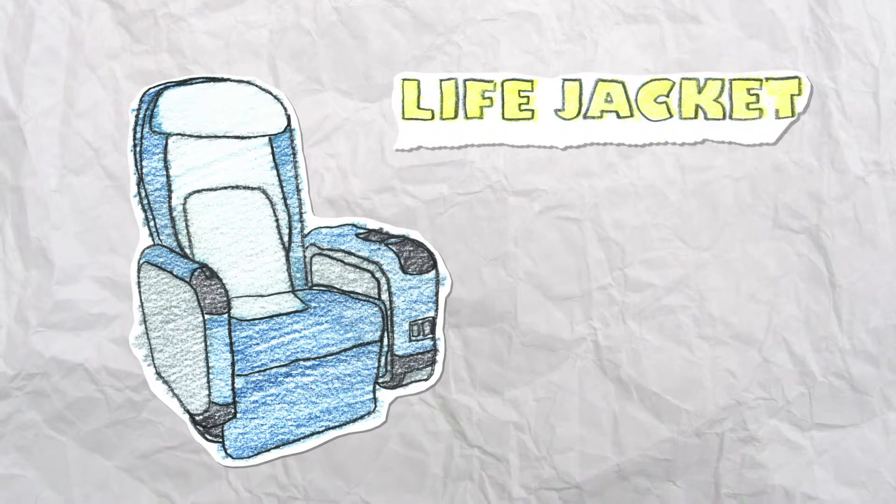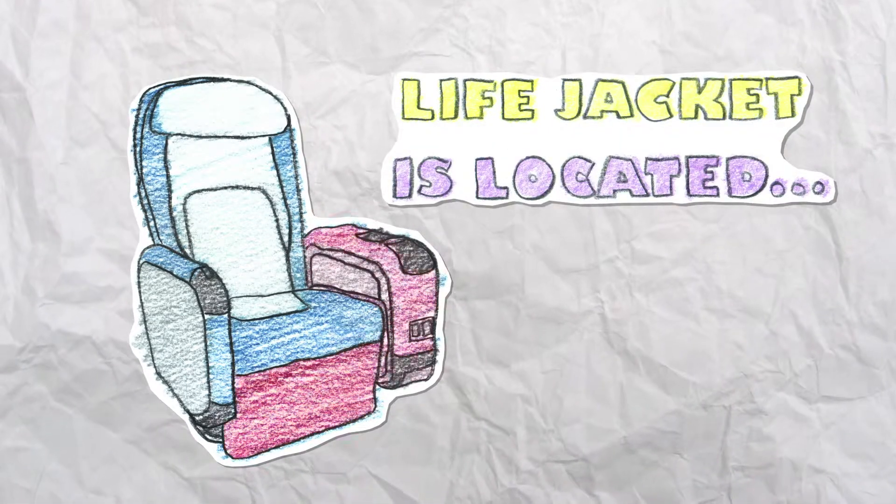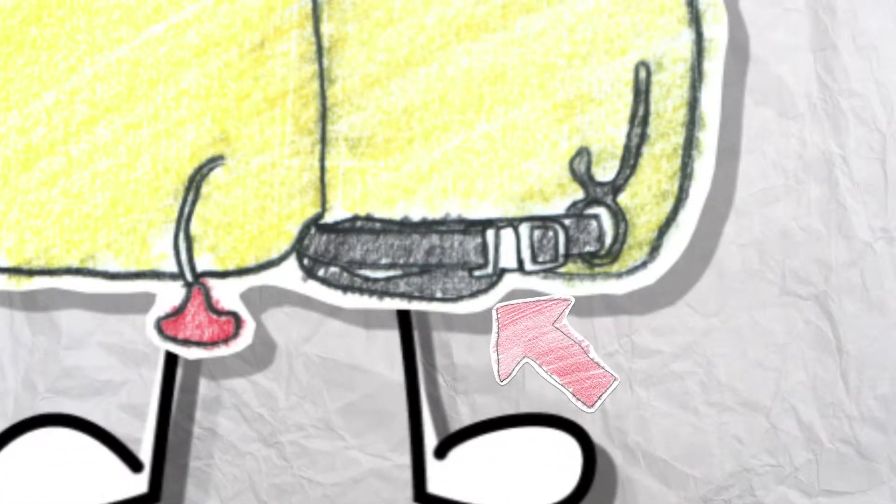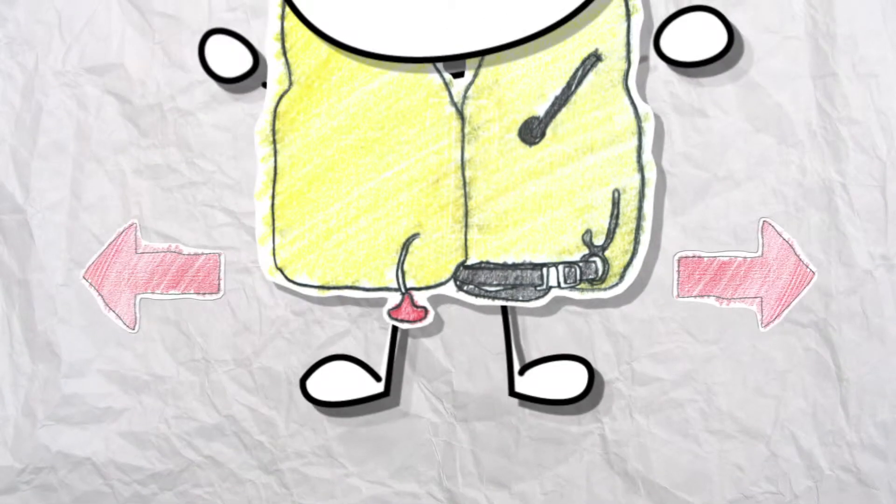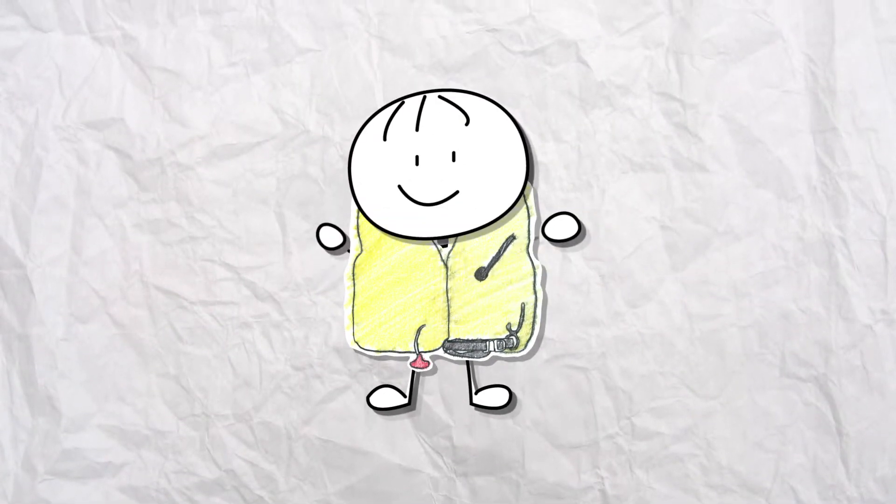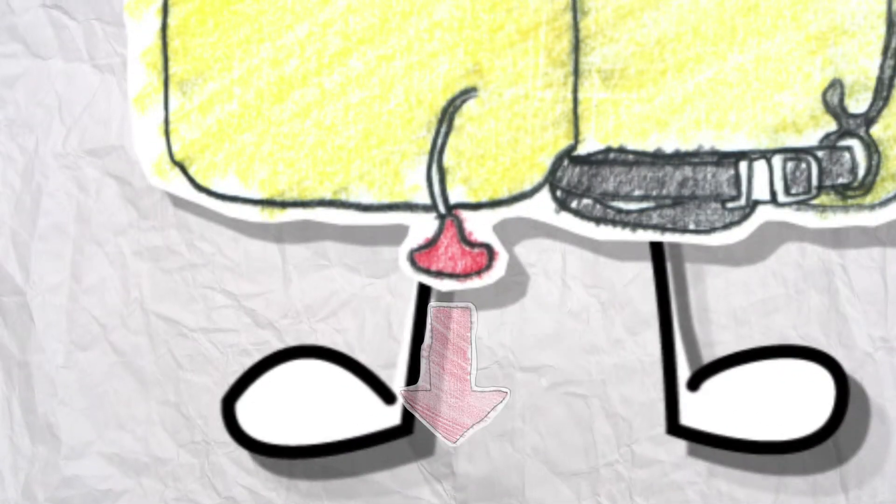Your life jacket is located under your seat or beneath your sensor armrest. When instructed, place it over your head. Pass the tapes around your waist and tie securely in a double bow on your left side. To inflate, pull the red toggle sharply downwards.